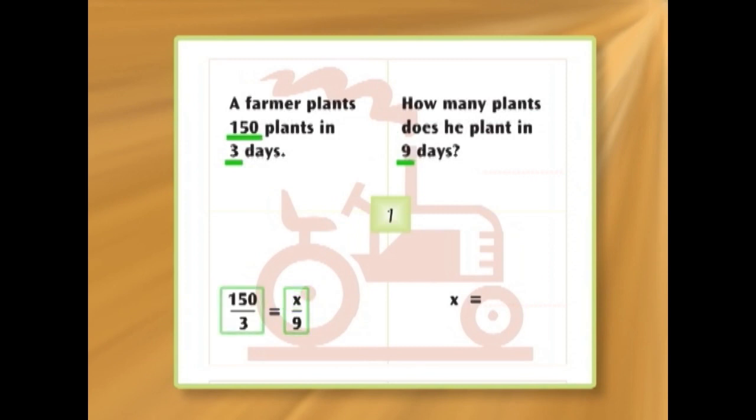You get it? 150 over 3 will tell us how many plants he plants in one day. So, x over 9 will also tell us how many plants he plants in one day. So, let's have a look. 150 divided by 3. 3 into 1 doesn't go. 3 into 15, that's 5. And the 0, 50. So, 150 over 3 is the same as 50.